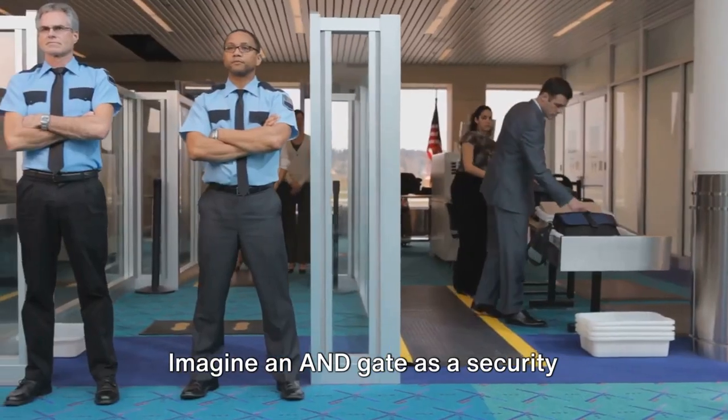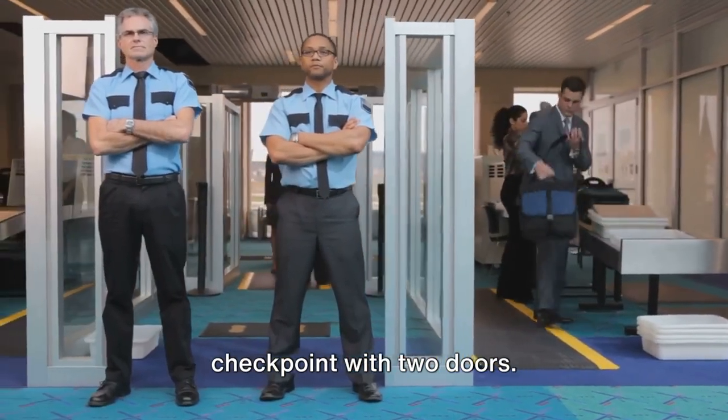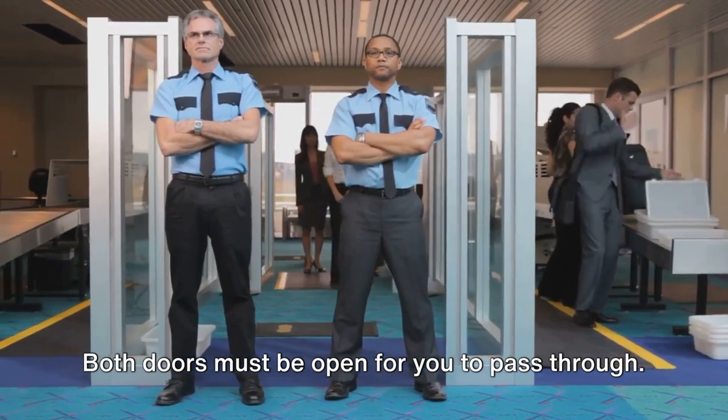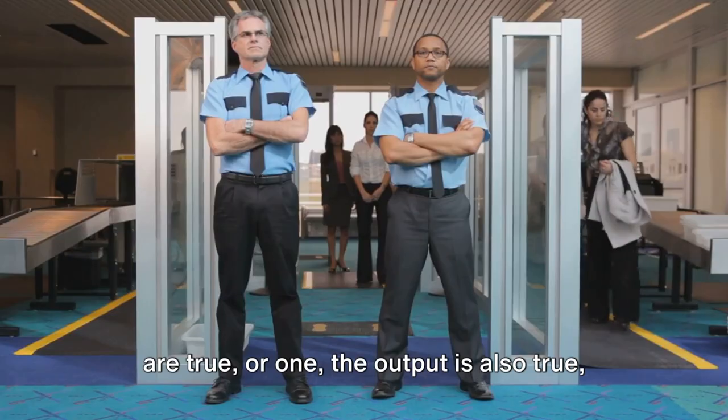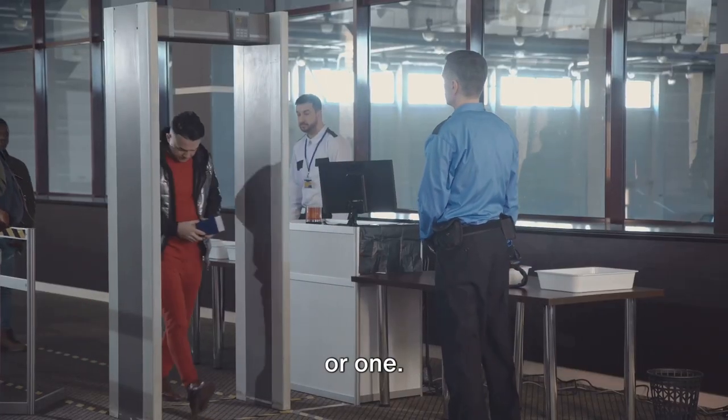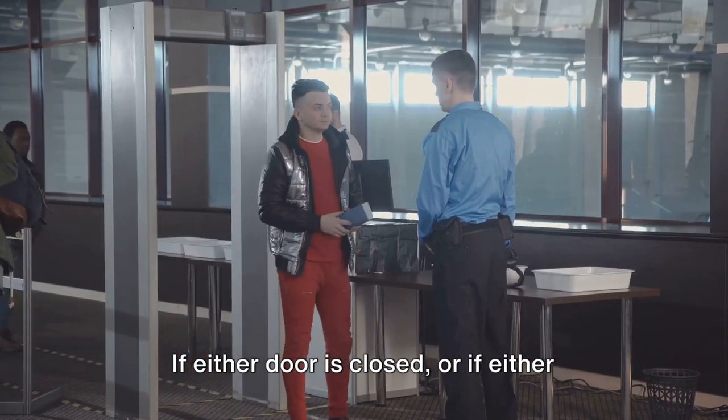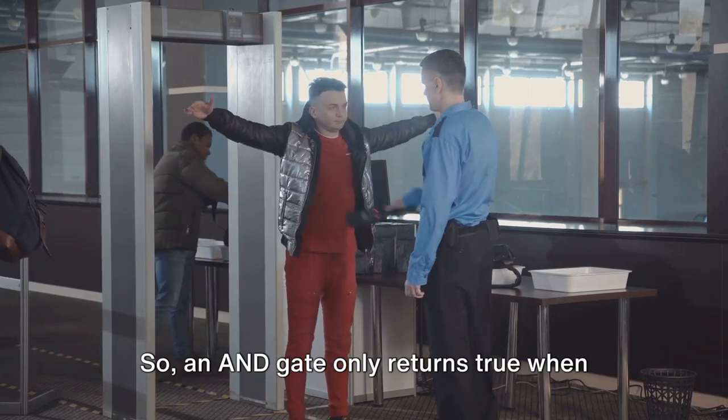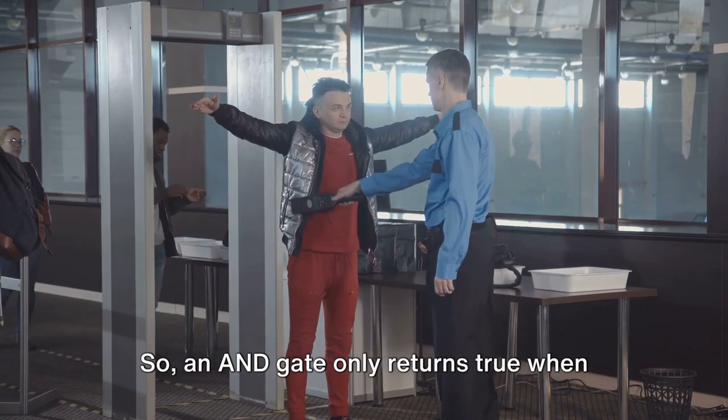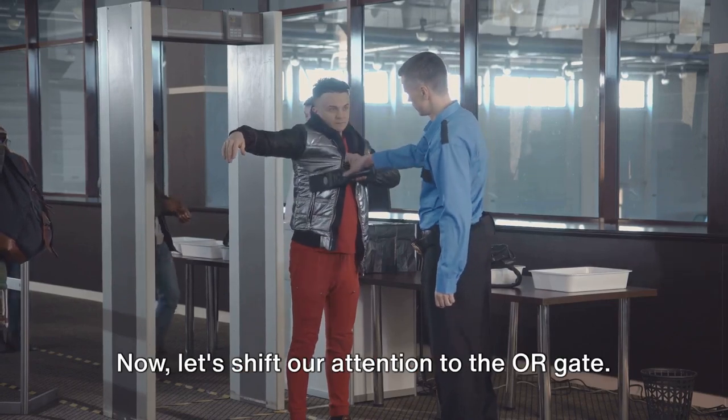Imagine an AND gate as a security checkpoint with two doors. Both doors must be open for you to pass through. In terms of digital logic, if both inputs are true, or 1, the output is also true, or 1. If either door is closed, or if either input is false or 0, the output is also false or 0. So an AND gate only returns true when all its inputs are true.